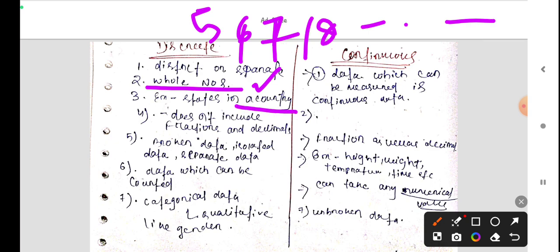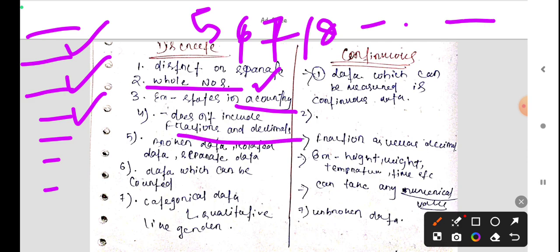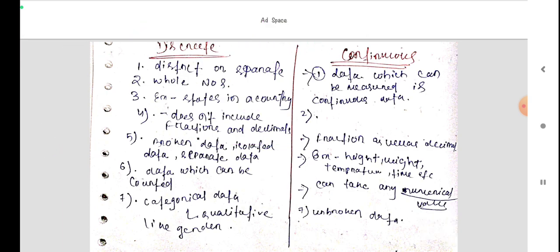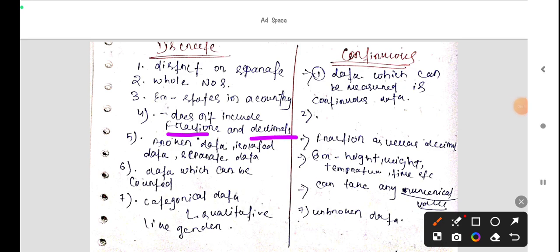Example, states in a country. Like Assam, Meghalaya, Manipur, Tamil Nadu, Chhattisgarh, Madhya Pradesh, Uttar Pradesh, all are states. So these are whole. It does not include any fractions and decimal. In discrete we do not calculate fractions and decimals. This is broken data, isolated data and separate data.